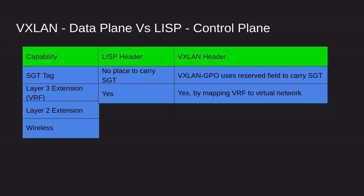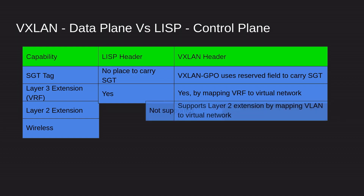For Layer 3 extension, or VRF, both LISP and VXLAN are able to support this. For Layer 2 extension, as mentioned, LISP does not support Layer 2, but VXLAN does support this extension by mapping VLAN to a virtual network.